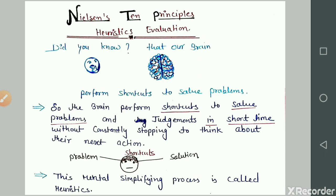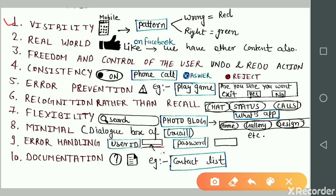First principle is visibility. The system should always inform the user about what is happening. In other words, all actions need instant feedback to guide you. Example: you have used a mobile and there we have pattern lock or password system.